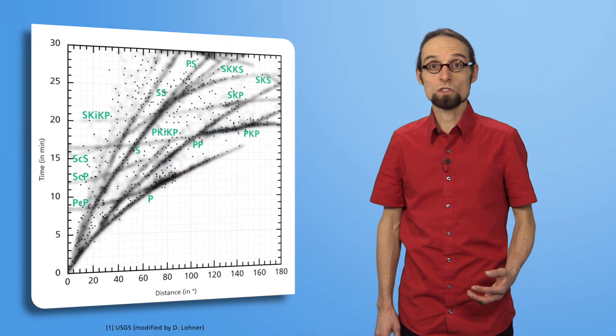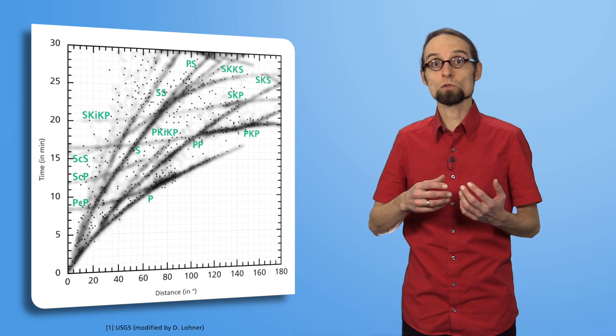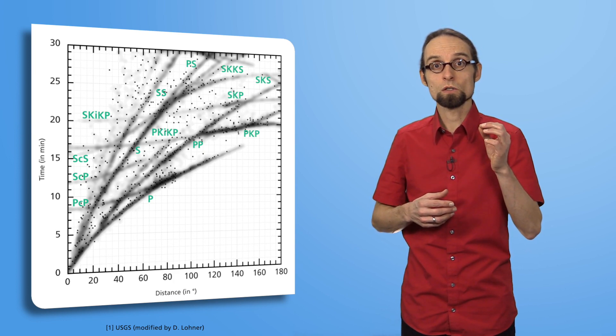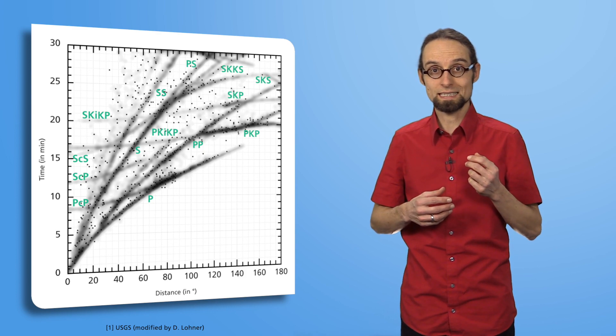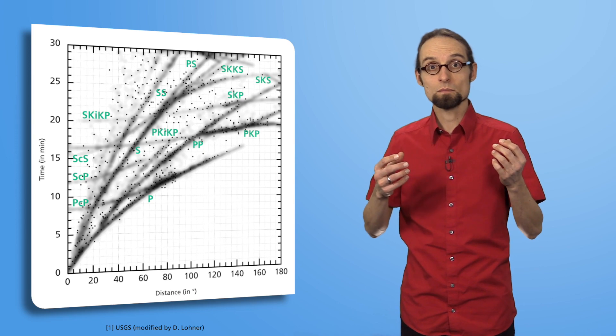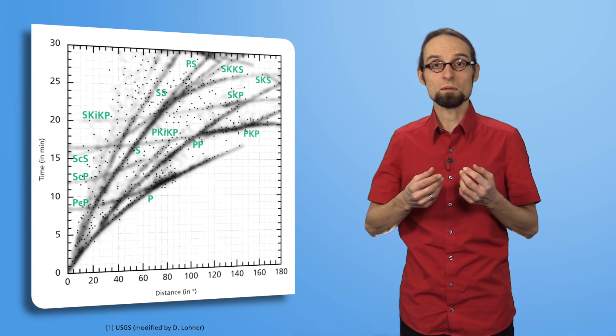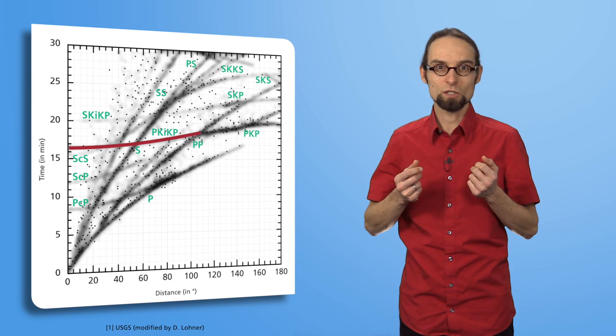At the boundaries of these major layers, seismic waves are refracted and reflected on their journey through the earth. Each point in the travel time graph belongs to a seismic wave on its path through the earth. Each line or branch describes a combination of reflections and refractions at certain layer boundaries in the earth and has its own name. One example here is P-K-I-K-P.